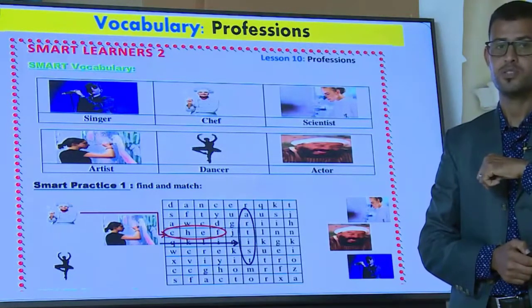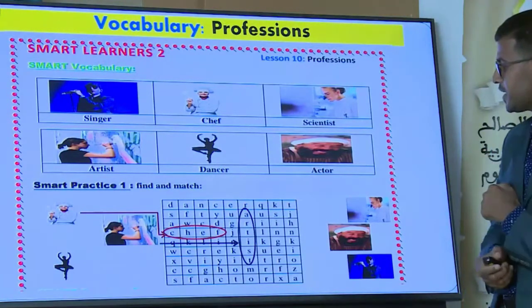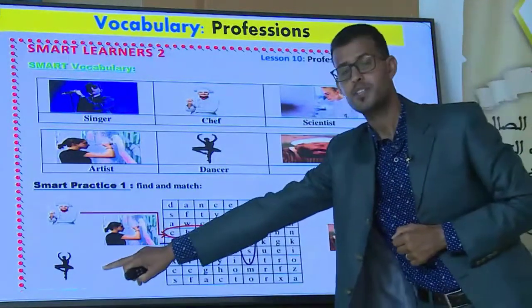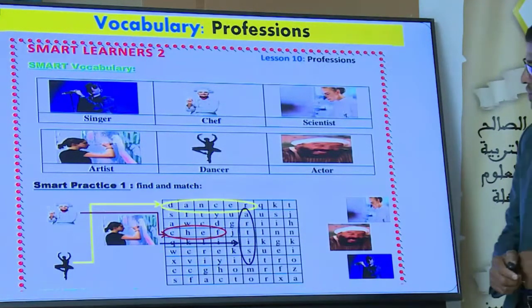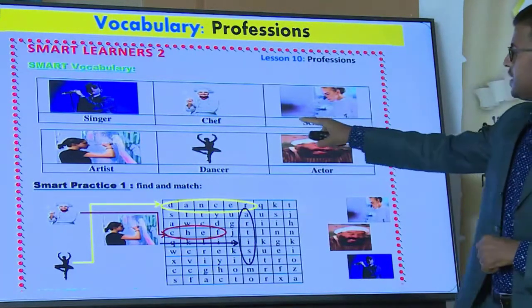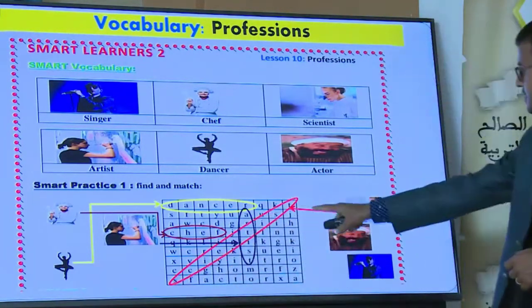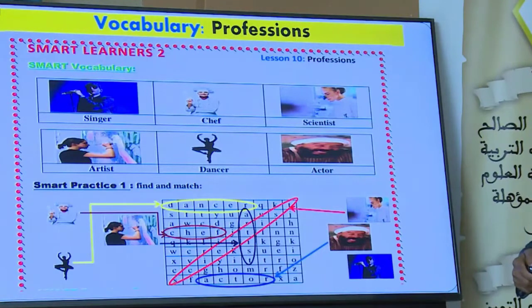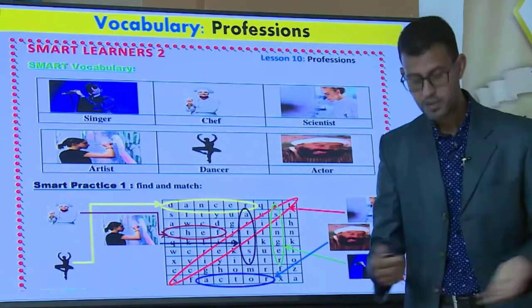I want you to stop the video right now and complete the exercise, then come back to see if you have everything correct. The answers are: artist, dancer, scientist — did you find it? Scientist, very good. And the next one is actor, and the last one is singer.